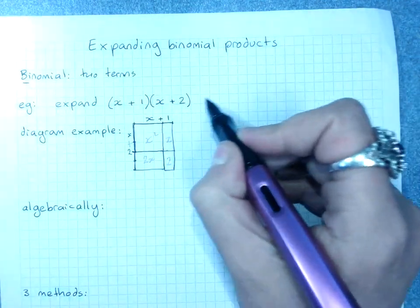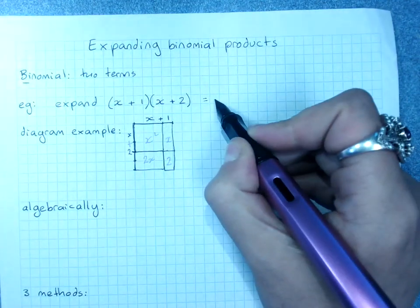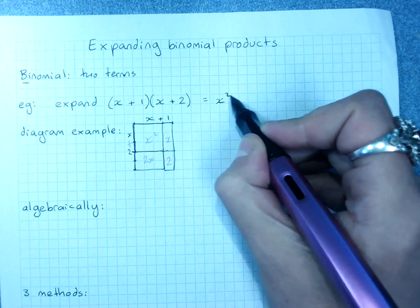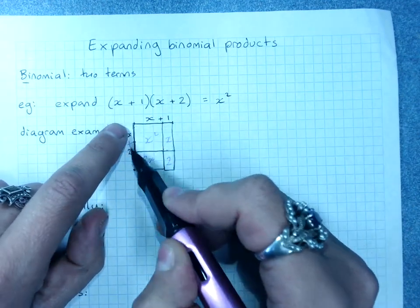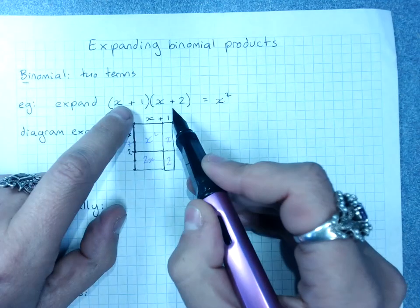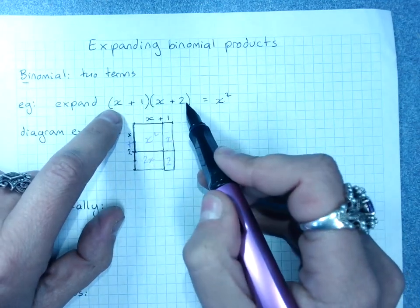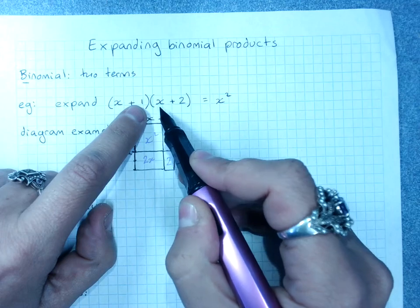Now, what happened when we got that? x squared is x times x, x times x.